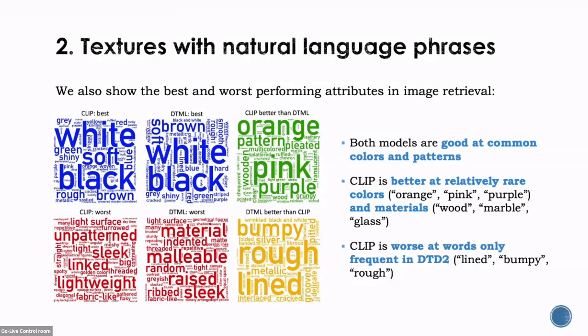We further look at the best and worst performing attributes in image retrieval on both models. Both models are good at common colors and patterns such as white, black, and soft. On the other hand, CLIP is better at relatively rare colors such as orange, pink, and purple, and rare materials such as wood, marble, and glass. While CLIP is worse at words that are frequent in DTD2 but rare in open-ended vocabulary, like 'lined,' 'bumpy,' and 'rough.'